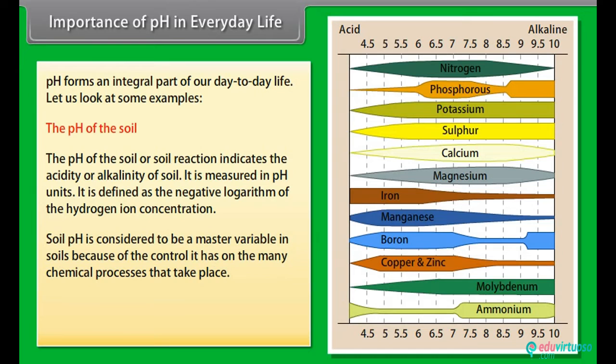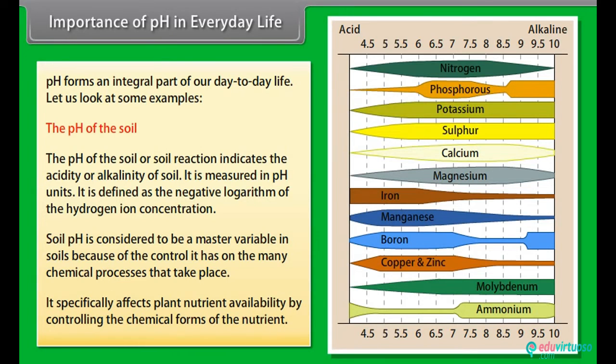Soil pH is considered to be a master variable in soils because of the control it has on the many chemical processes that take place. It specifically affects plant nutrients' availability by controlling the chemical forms of the nutrient.